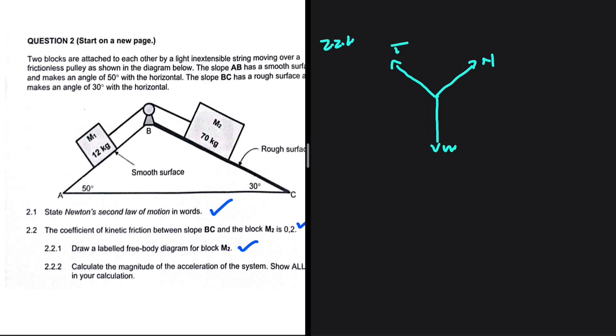The mass of M2 is 70 kg. The mass of M1 is 12 kg. So it will make sense to assume that M2 is moving down the slope. If that is the case, then the frictional force will be up the slope.